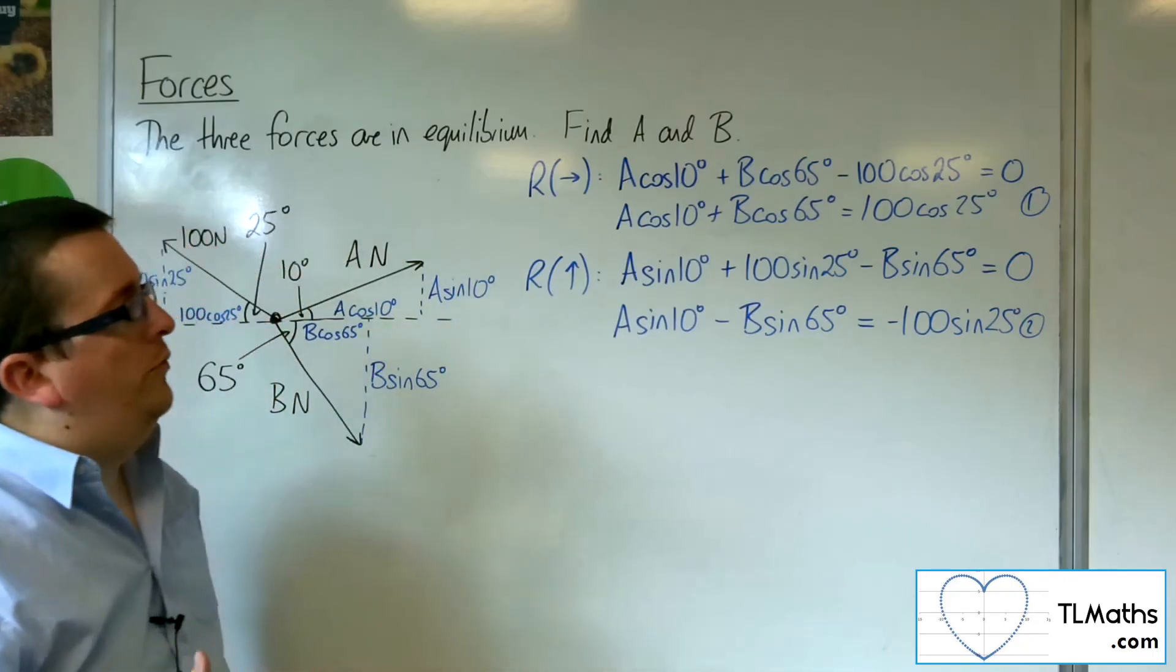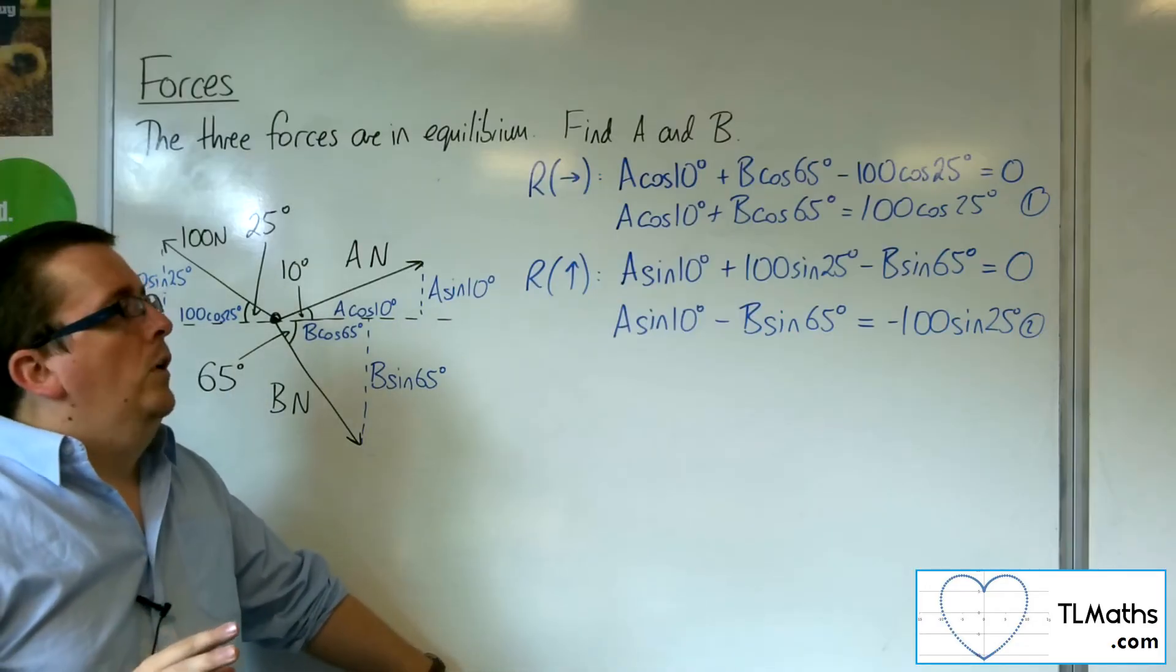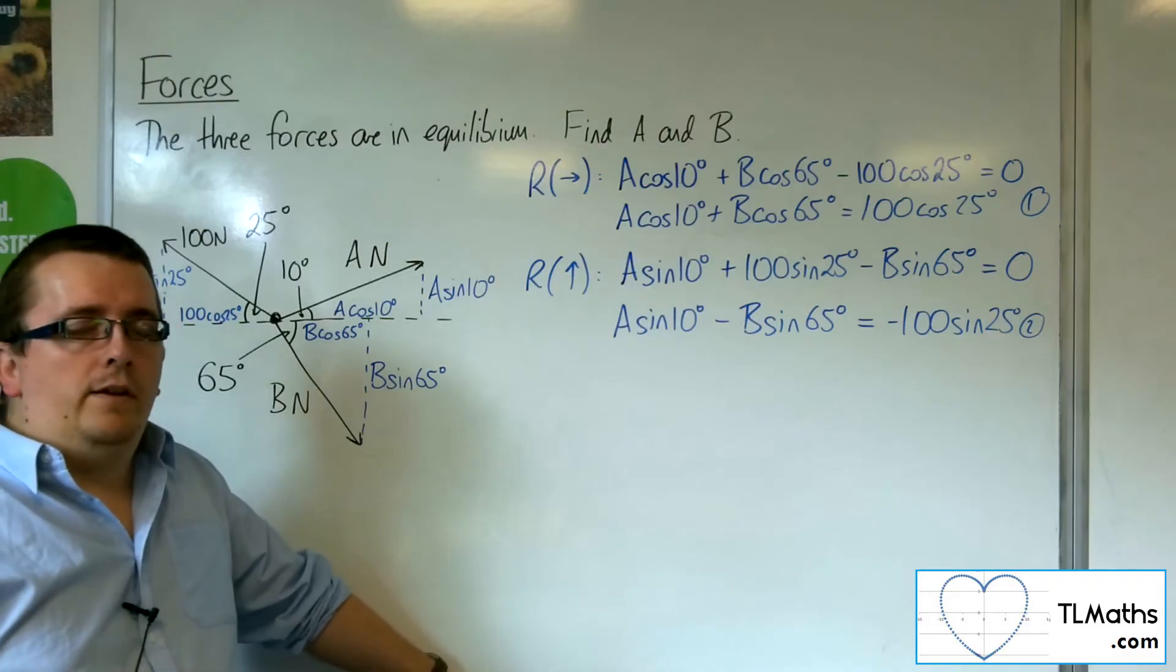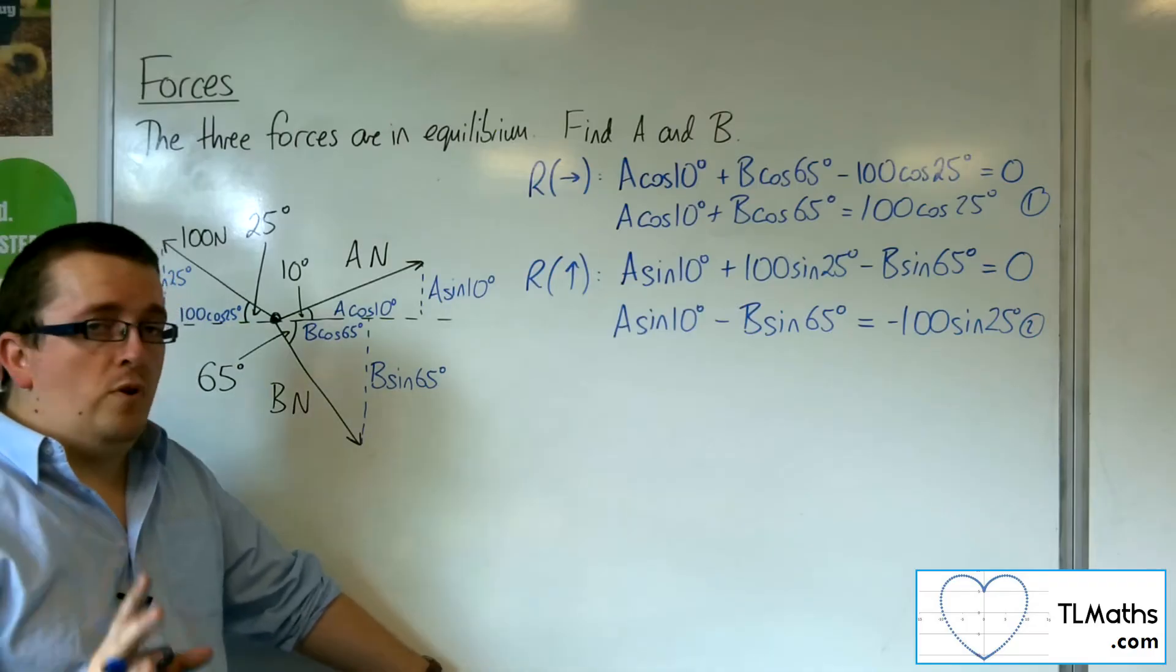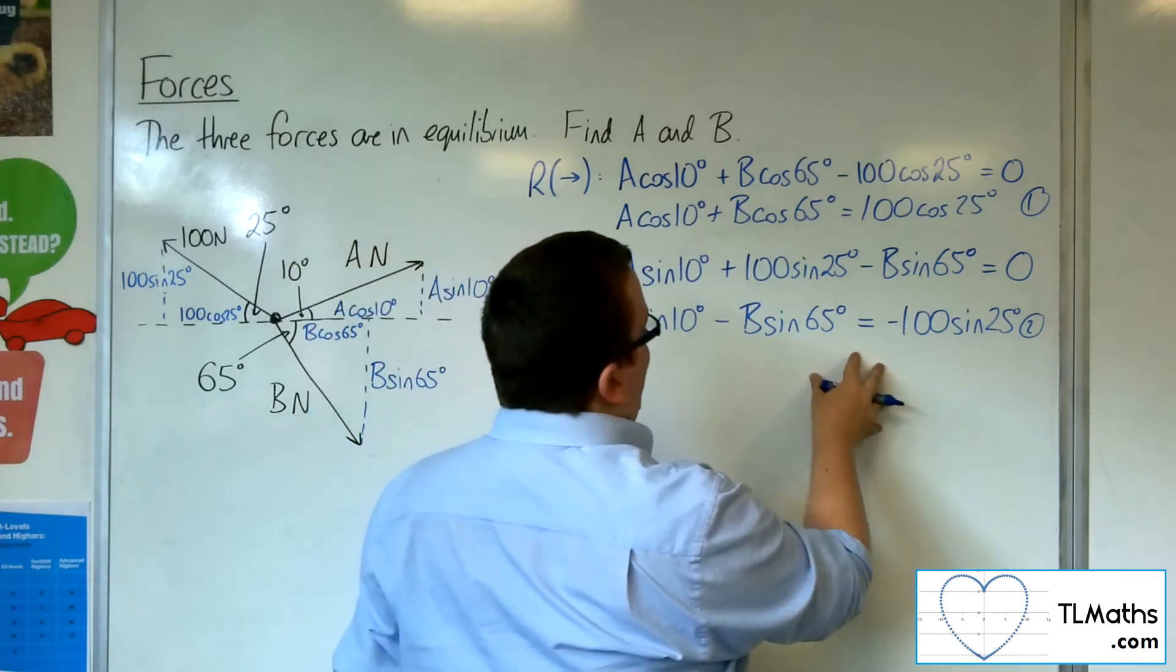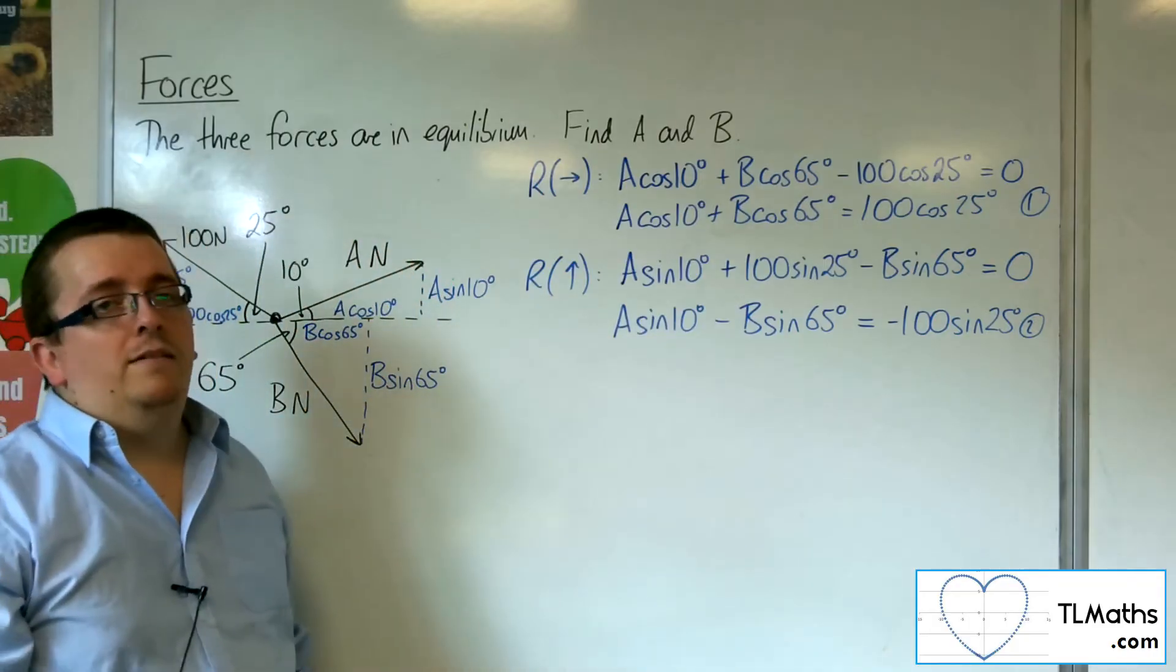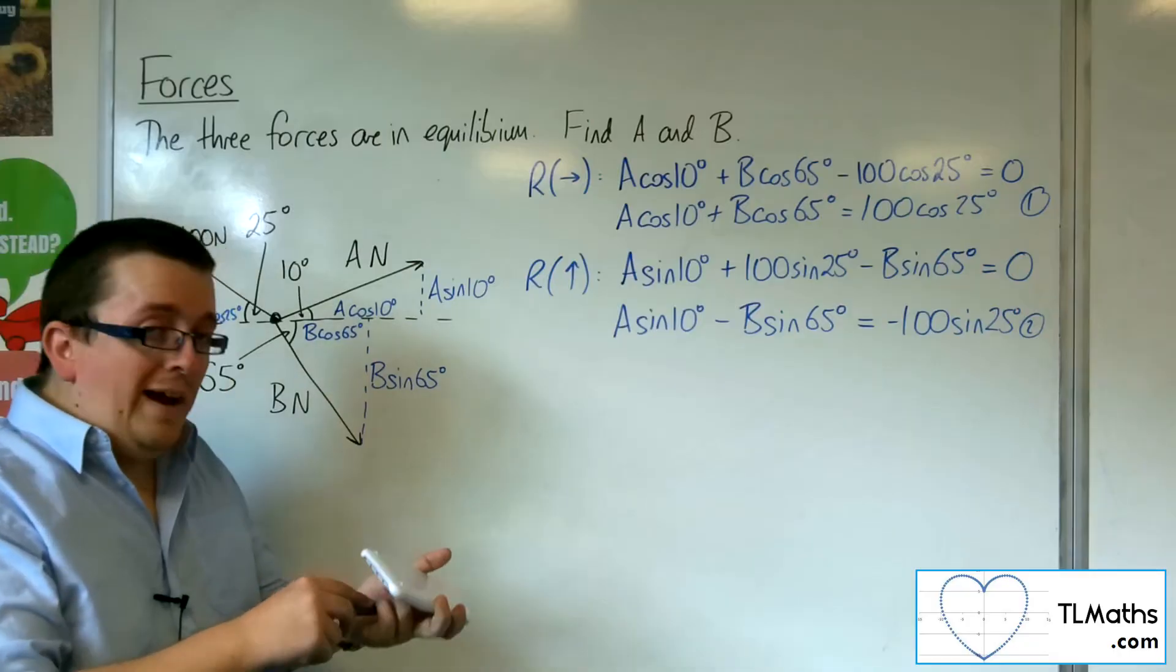Now, trying to use our tried and trusted methods of the elimination method is going to be fiddly. So if you were going to do this algebraically, the only way to do it right would be to rearrange one of these to get A equals, substitute it into the other one. Then you can rearrange to get B, and then you can find A. That's the only way to do it algebraically.